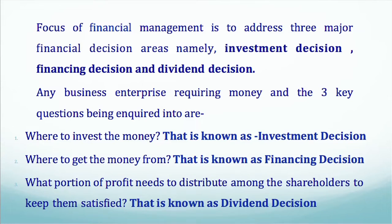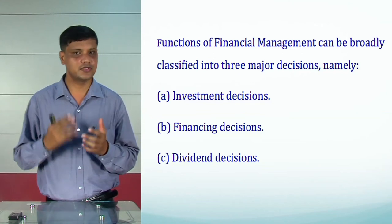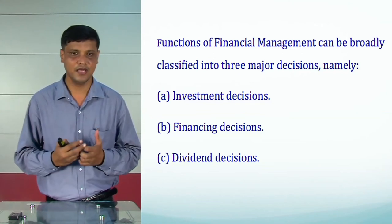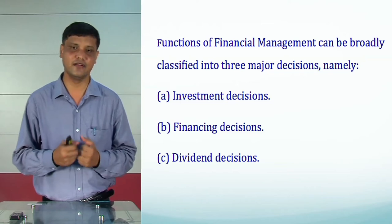Where to get the money from — that is known as financing decision. And what portion of profit needs to be distributed among the shareholders to keep them satisfied — that is known as dividend decision. Thus, the functions of financial management can be broadly classified into three major decisions, namely investment decision, financing decision and dividend decision.